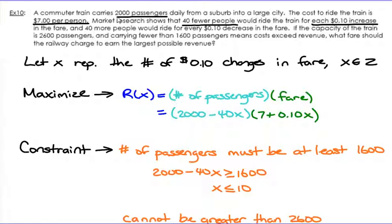The next sentence says pretty much the same thing but in an opposite way. If you decrease the price, every dime decrease is going to result in 40 more people riding. So pretty much the same thing, and that's why I'm not really going to underline anything.